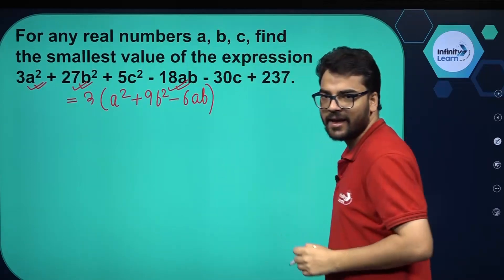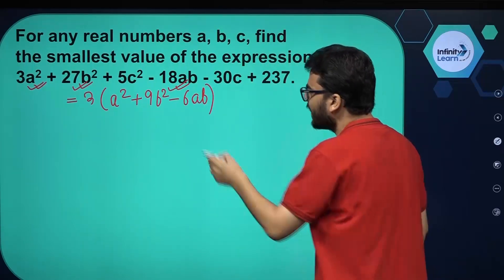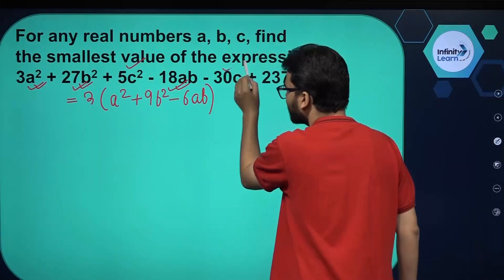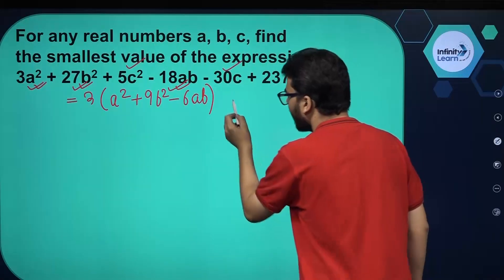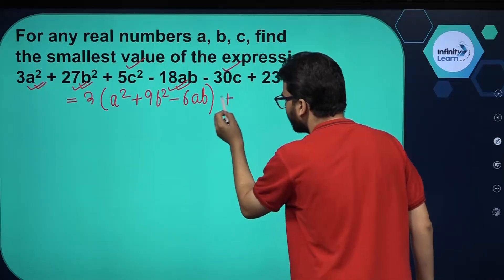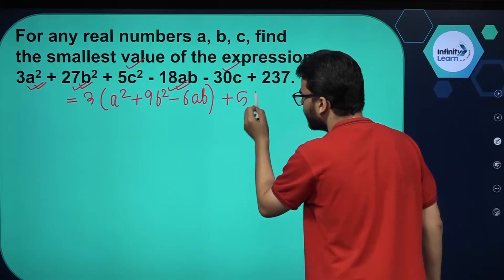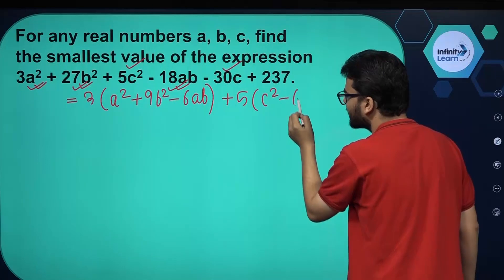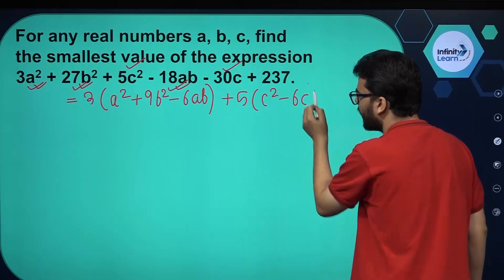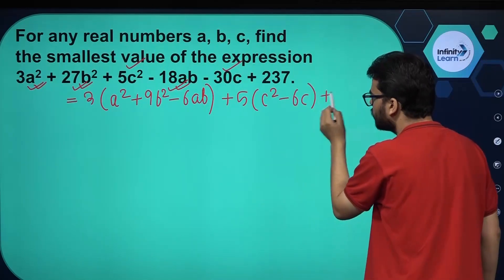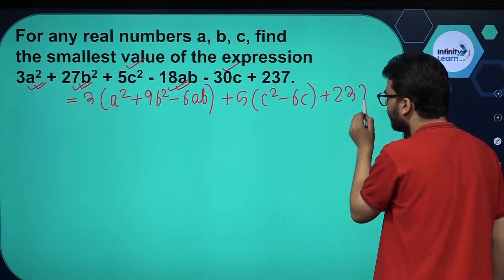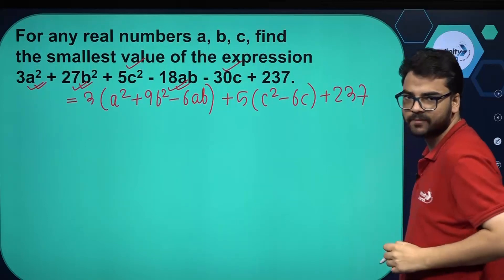For the second group we have 5c squared minus 30c. Can we take 5 as common? If we take 5 as common, we are left with c squared minus 6c, and 237 remains as it is.